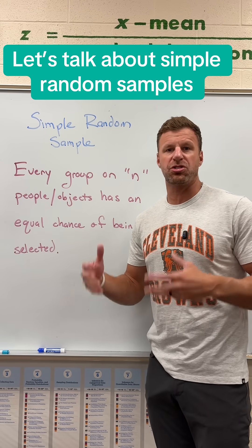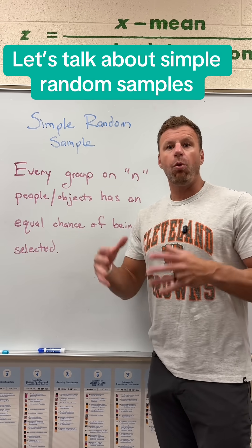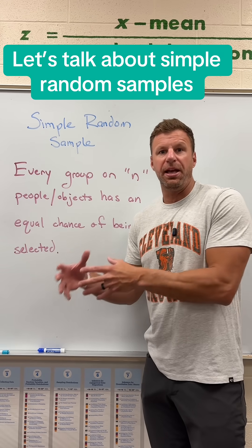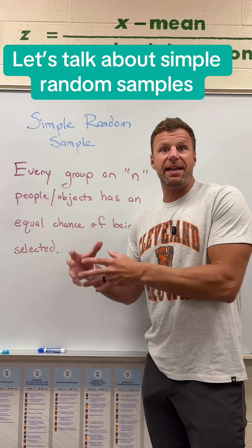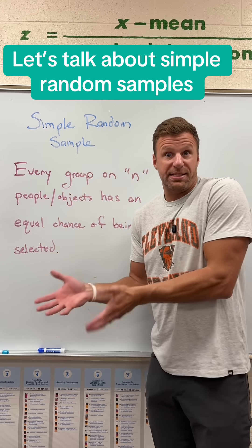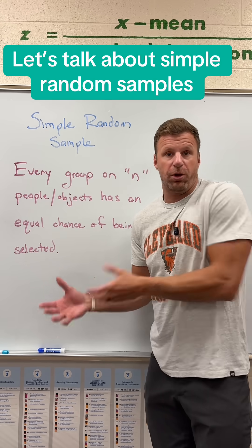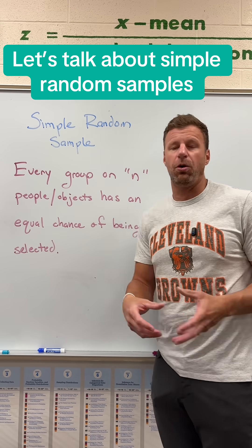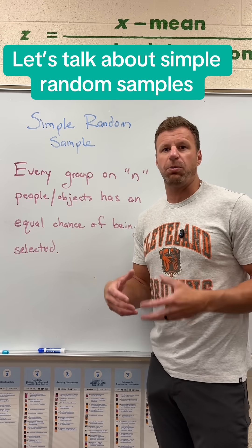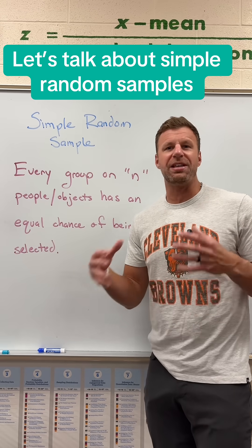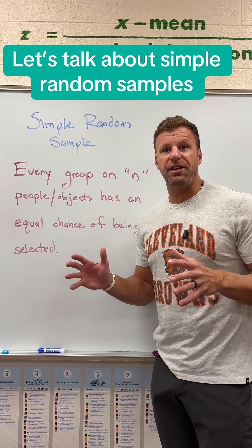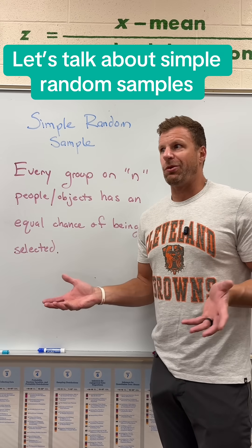Imagine your population is students of Twinsburg High School. Every single sample of size 50 must be equally likely to occur. So imagine a group of 50 boys — that sample is possible. A group of 50 girls — possible. A group of 50 honor students — possible. A group of 50 football players — possible. Any possible sample of 50 is, well, possible.